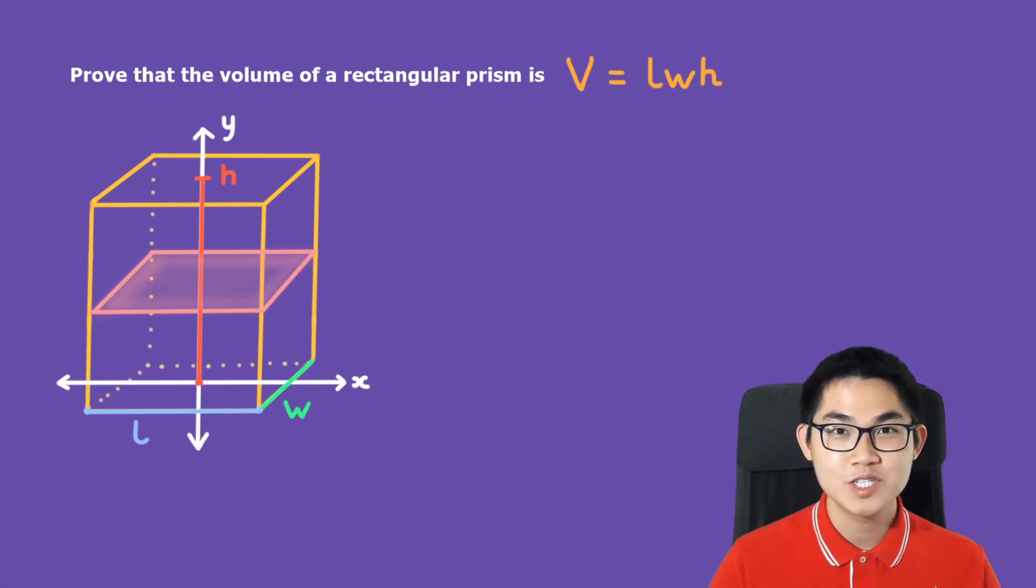In this video, I'm going to show you the calculus way to prove that the volume of a rectangular prism is V equals the length times the width times the height.